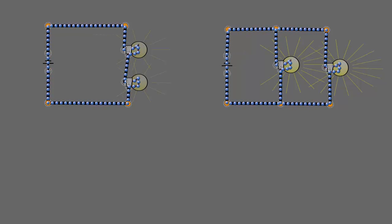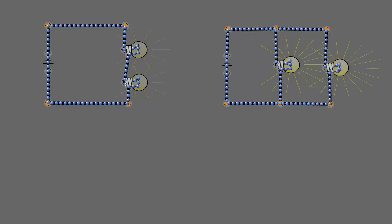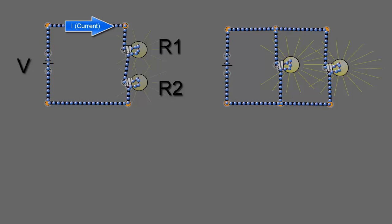It looks like the current coming out of the battery on the series circuit is quite a bit lower than the current coming out of the battery for the parallel circuit.